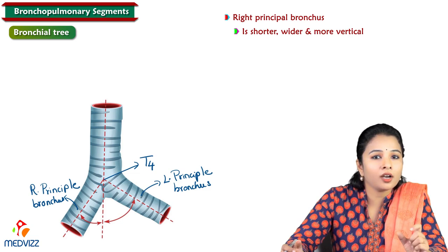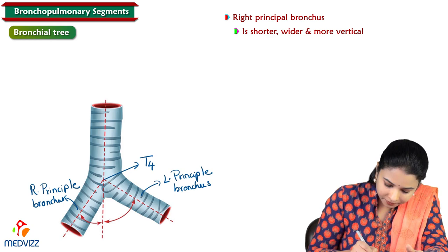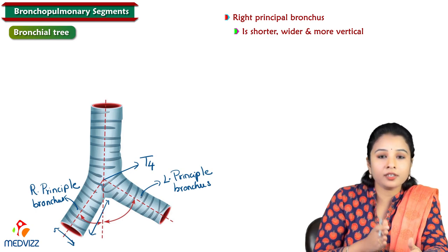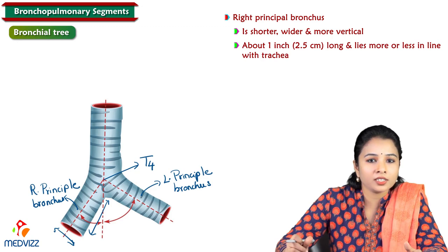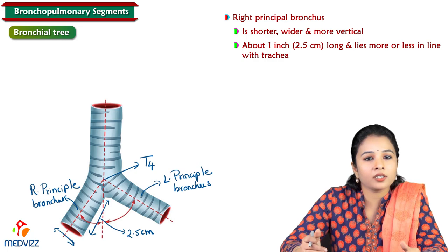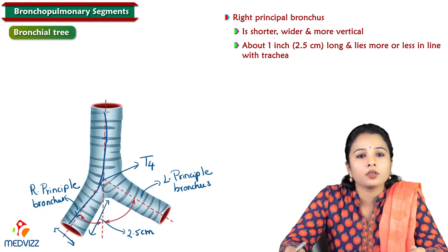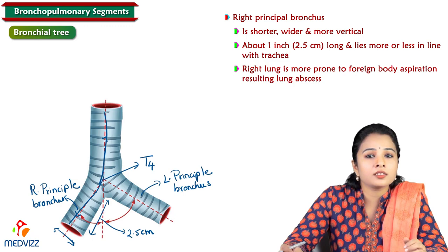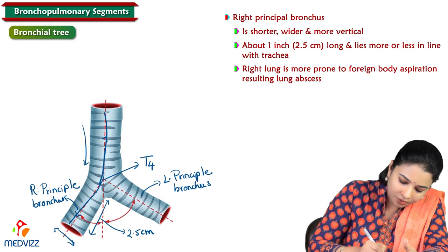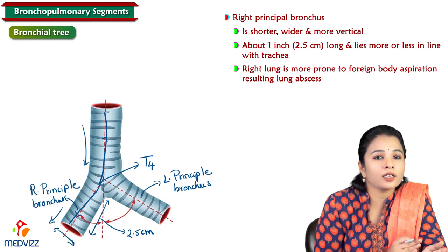The right principal bronchus is shorter, wider, and more vertical. It is around one inch or 2.5 centimeters long and is more or less in line with the trachea. Because of this, the right lung is more prone to foreign body aspiration resulting in lung abscess, making right lung infections more common than the left.